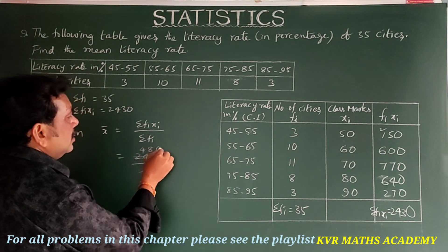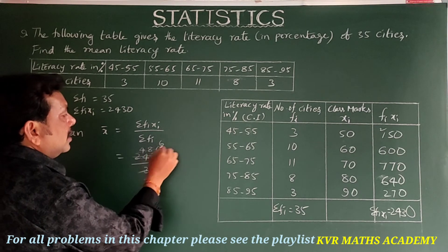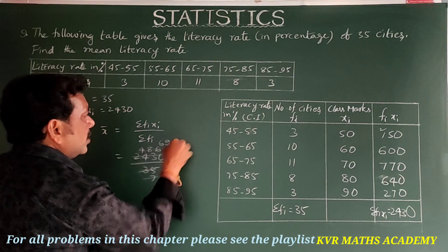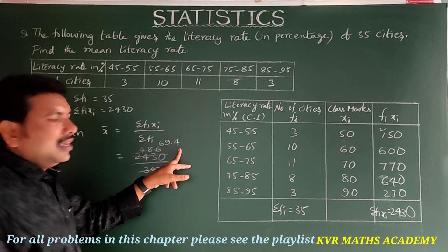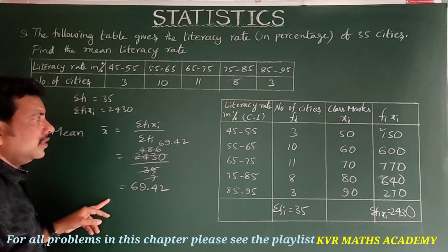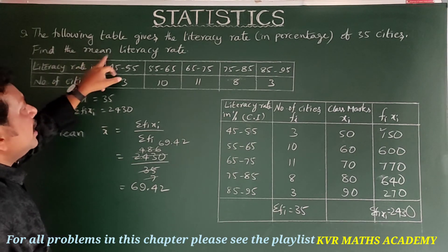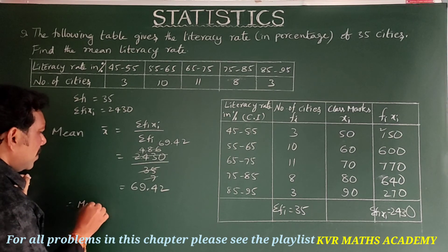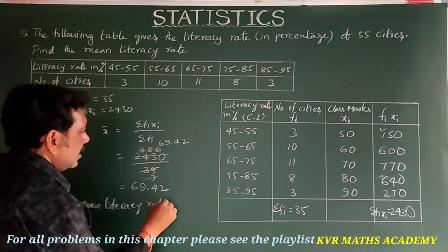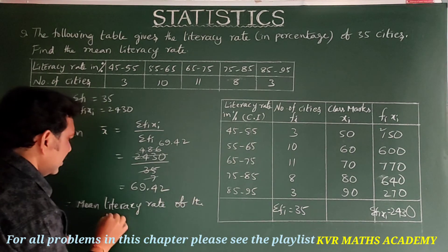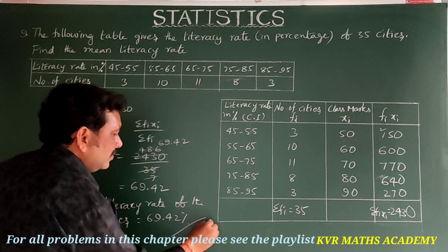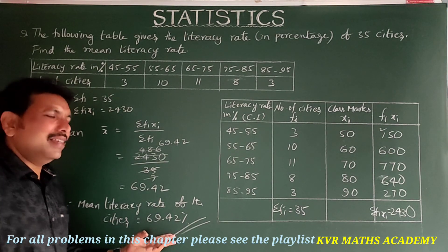Dividing 2430 by 35 gives 69.42. Therefore, the mean literacy rate of the cities is equal to 69.42 percent. Have you understood clearly? Note it down.